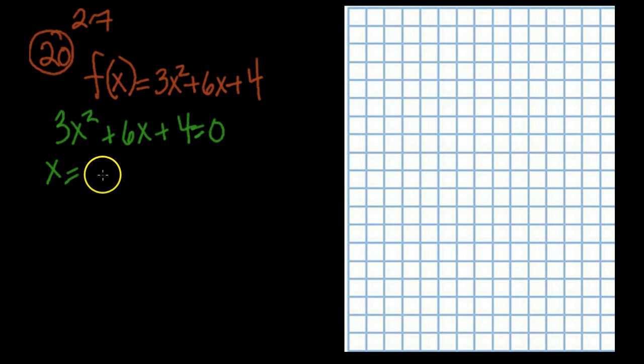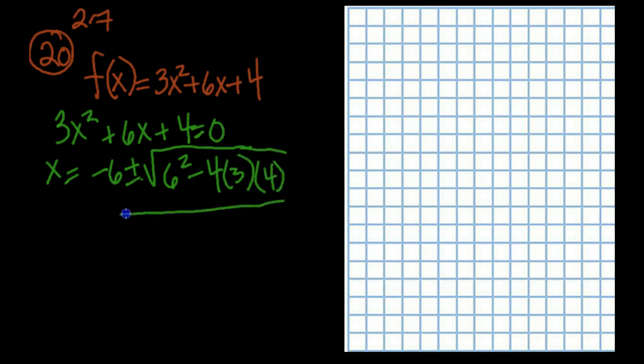f(x)=3x²+6x+4, so 3x²+6x+4=0. x equals, you guys know what a, b, and c are, -6 plus or minus square root, then we've got 6²-4(3)(4), all over 2(3). Well, that was really exciting. If we clean this up, we get -6 plus or minus the square root of -12.